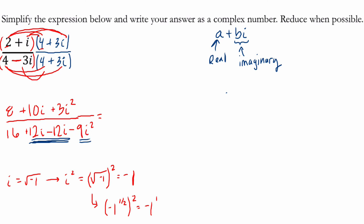So if I rewrite my denominator, I have 16 minus 9 times negative 1. In the numerator, I have 8 plus 10i, and then plus 3 times negative 1, for the same reason that I squared right here is negative 1.